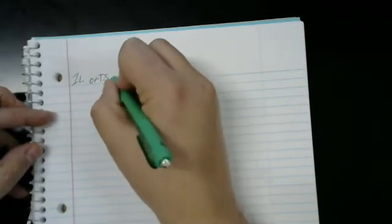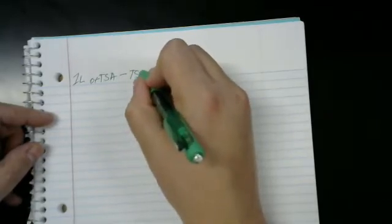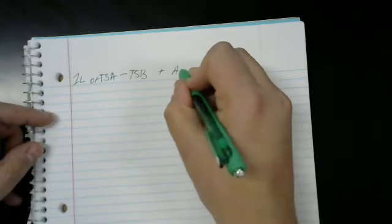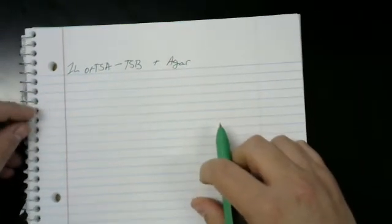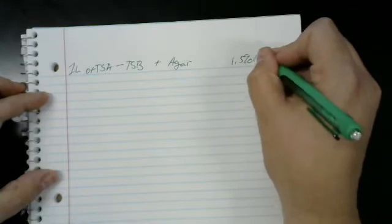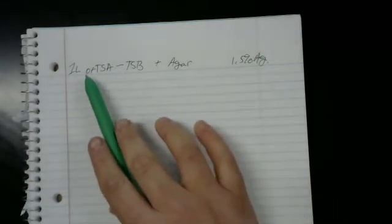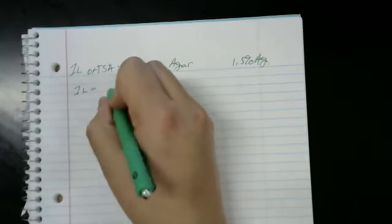So if I ask you to make, let's say our goal here is to make one liter of tryptic soy agar. That means we're going to need two components. We're going to need tryptic soy broth and agar. Where do we get these types of things? Well, we're going to go to our agar powder, which I have right here. In this case, we're just going to use 1.5% agar. One liter is 1,000 mils.